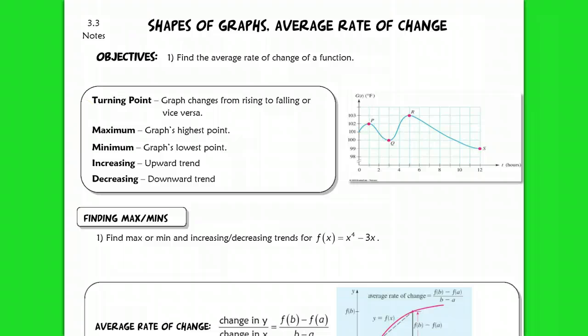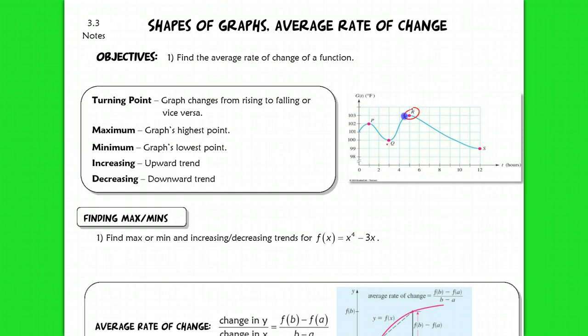So here's some vocab. The turning point of a graph is literally where it will turn and go from rising to falling or vice versa. So like P, Q, R — these are all turning points of your graph.